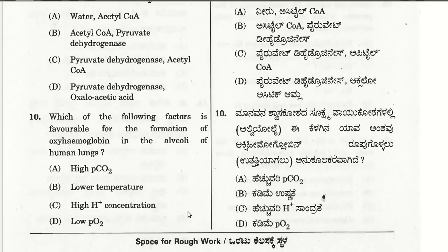The eleventh question: which factor is favorable for the formation of oxyhemoglobin in the alveoli of human lungs? Lower temperature is favorable for the formation of oxyhemoglobin in the alveoli of human lungs.